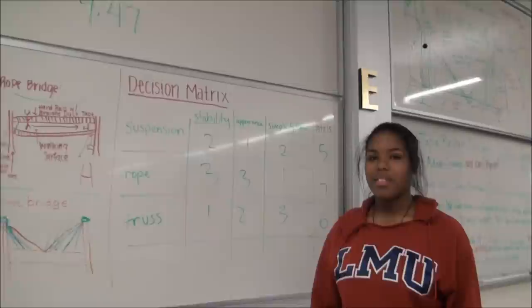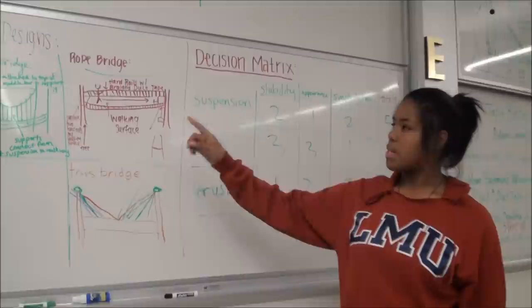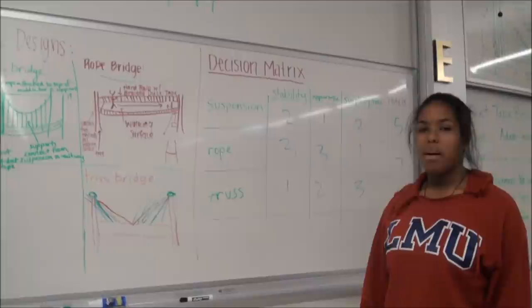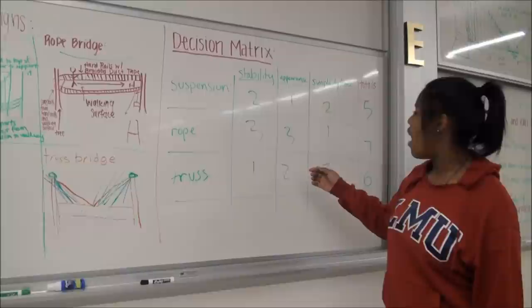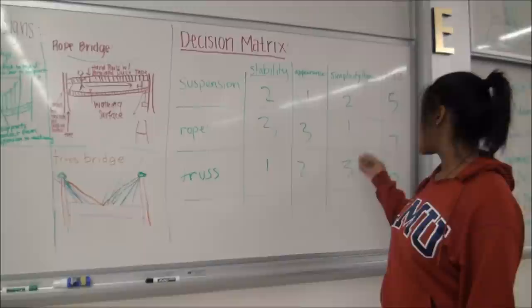To begin our decision making process we had sketched out our original ideas which were the suspension, rope, and truss bridge. And we used a decision matrix which basically measures the different qualities of each bridge on a scale of one to three. One being the best, three being the worst. We also took the totals five, seven, and six and used that to determine which bridge we thought was the best.